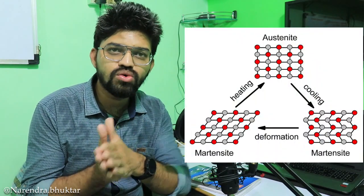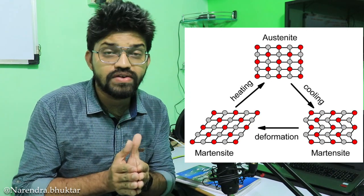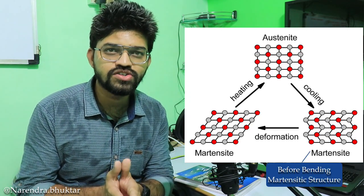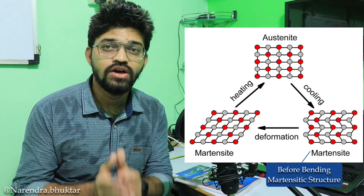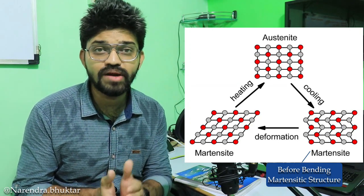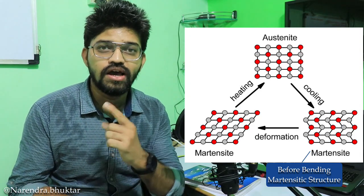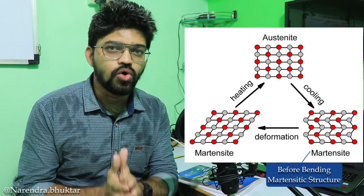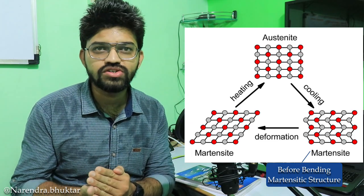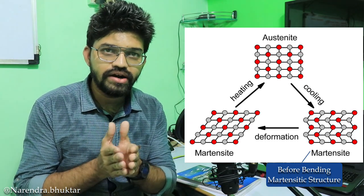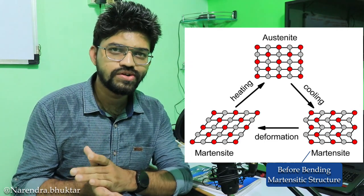How does the wire actually remember the shape before bending? There is no such thing as 'remembering' — it depends on microstructure. If we look at the microstructure before bending at a certain temperature, it is having a martensitic structure. This martensitic structure we first learned about in the iron-carbide equilibrium diagram. At room temperature, before bending, the material has a martensitic structure — martensite is very hard, and we need more force to bend that particular wire.